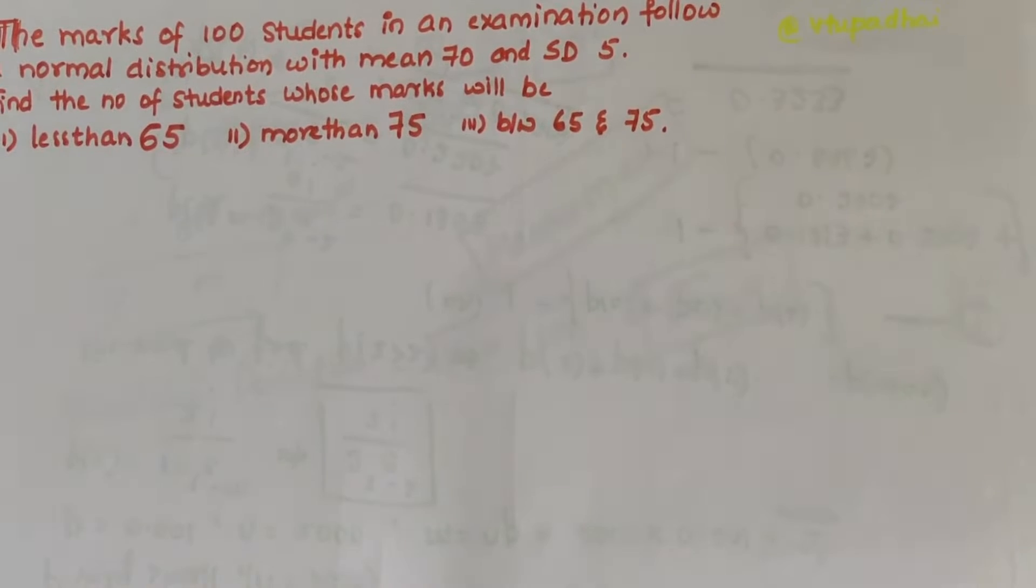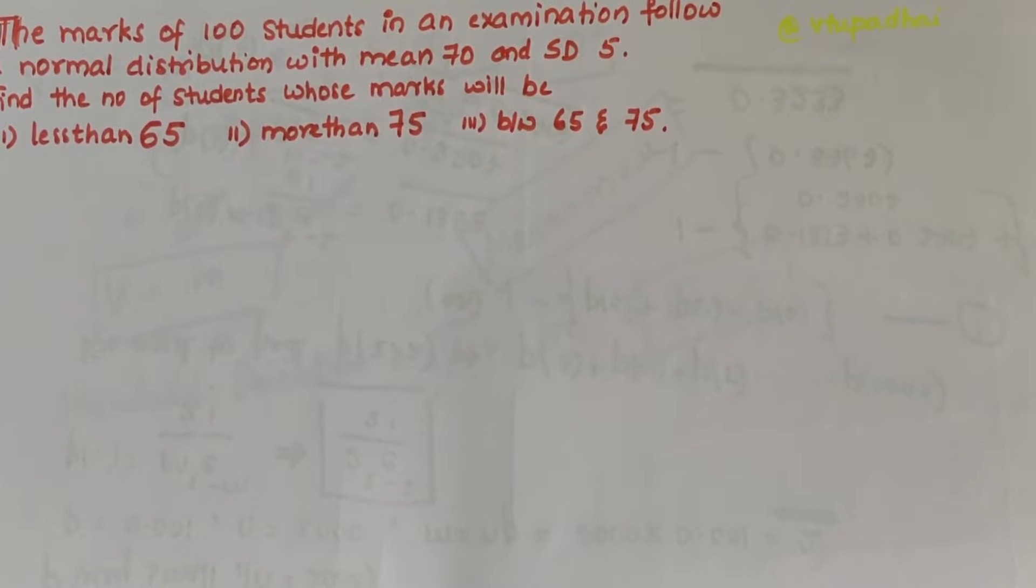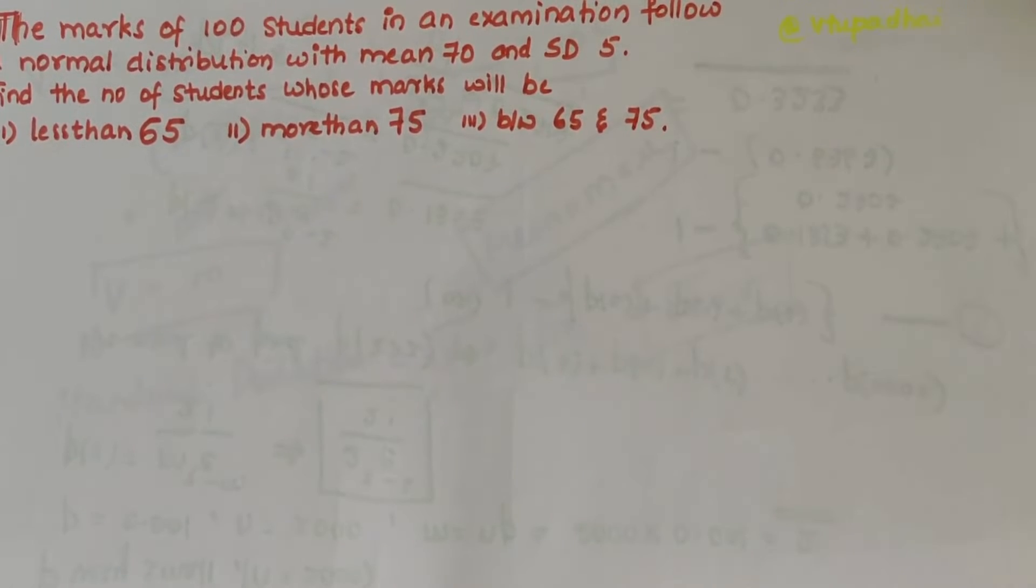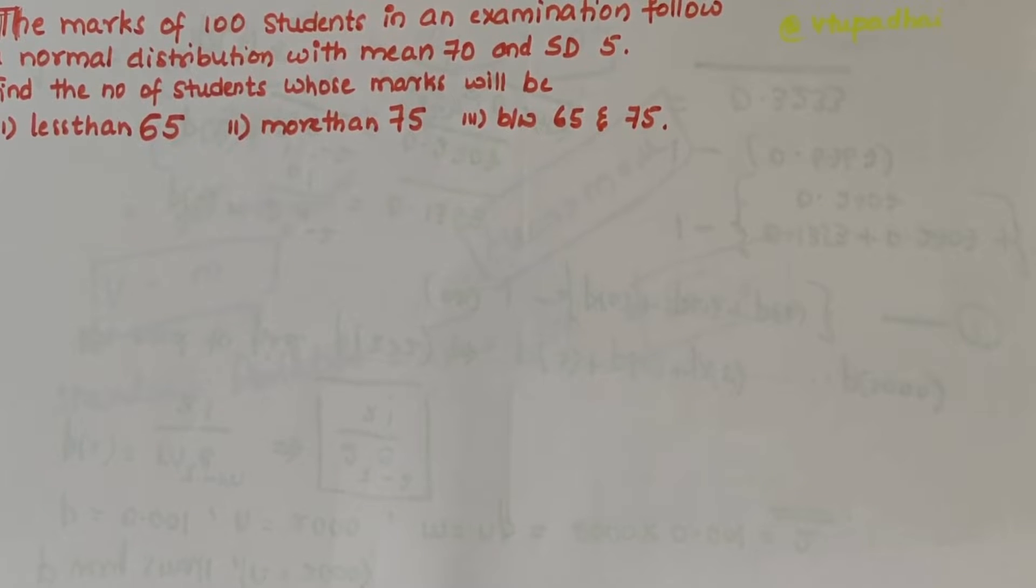In this video we'll be solving a question related to normal distribution. The problem statement is that the marks of 100 students in an examination follow a normal distribution with mean 70 and standard deviation 5. We have to find the number of students whose marks will be less than 65, more than 75, and between 65 and 75.